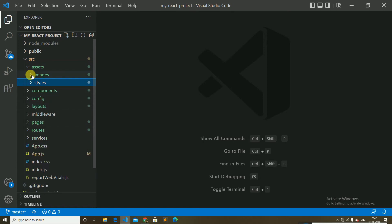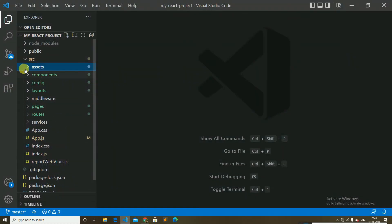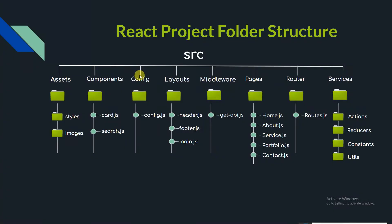Components are the building blocks of our React project. This folder contains UI elements like modals, loaders, search bars, cards, etc. — such as the search and card components — that can be used across various files in the project. In the src folder you can see the component folder containing the card and search bar components.